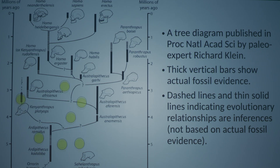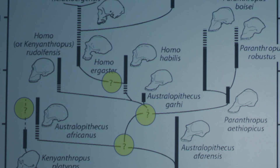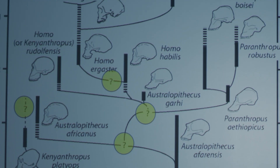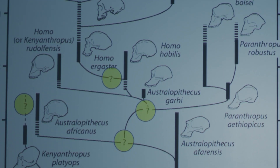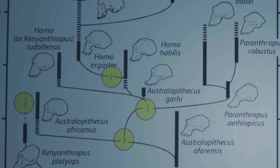And what do the eight question marks on the chart mean? Well, they are inferred relationships between the different fossil icons in the chart. Same with the dashed lines and the thin solid lines — they show the theoretical evolutionary connections between the fossil icons.